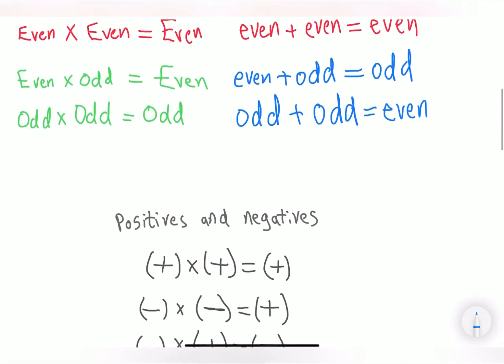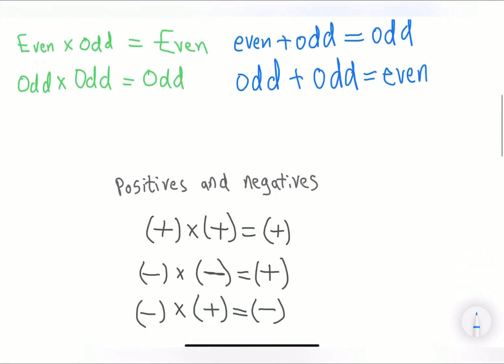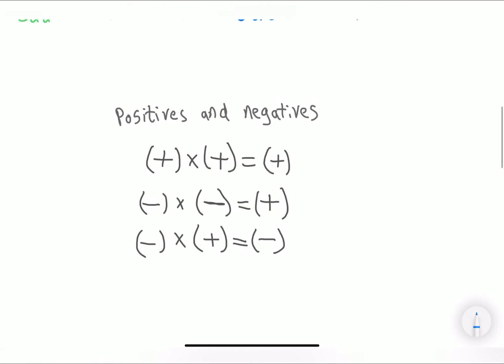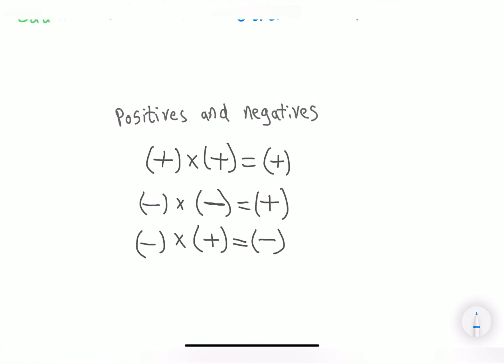Let's look into another mini concept. So positives and negatives. First and foremost, we can see that a positive number multiplied by a positive number is equivalent to another positive number. And a negative number multiplied by a negative number is equivalent to a positive number. And a negative multiplied by a positive equals a negative.